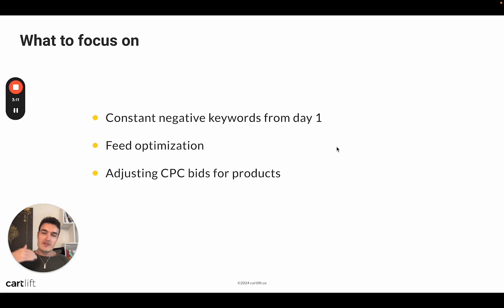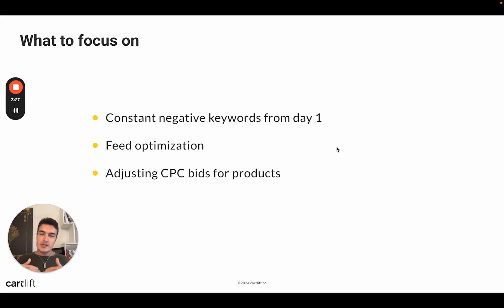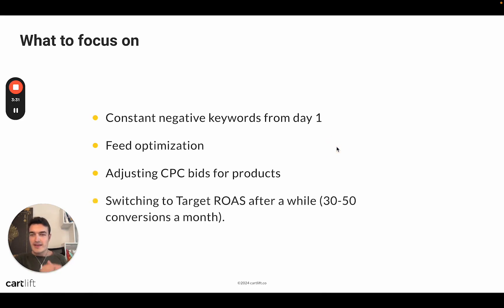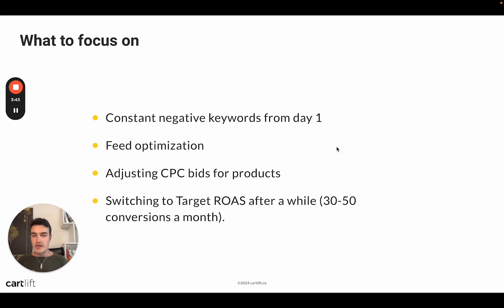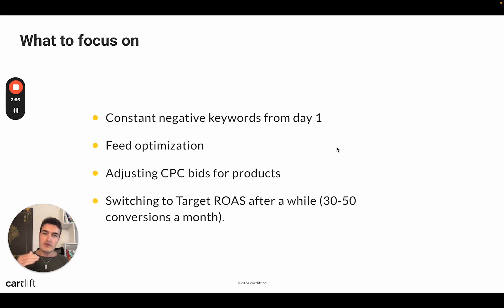You should also adjust CPC bids for your products on an ongoing basis. Products that perform very well, you can assign higher bids to; products that don't perform, you can set lower bids or remove them altogether. In the beginning, constantly refine what's in your shopping campaign. Eventually, when you have around 30 to 50 conversions a month — ideally a little more — you want to switch to target ROAS, because that's where target ROAS tends to perform better than manual CPC. Of course, eventually your small budget will grow and then you can think about completely different setups.